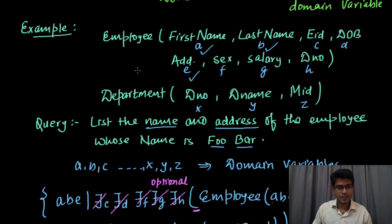If we look at the relation given we have employee and department and what we have done is we have given a domain variable to each attribute a, b, c, d, e, f, g, h and for department we have given x, y and z.